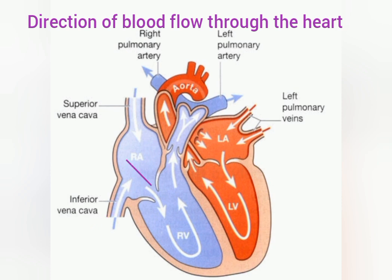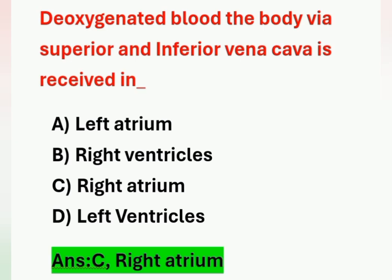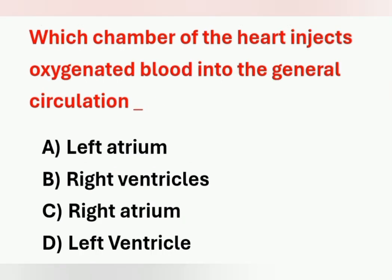Describing the blood flow path: from the right atrium, through the right atrioventricular valve, blood passes to the right ventricle. From the right ventricle, through the pulmonary artery, it goes to the lungs for purification. After purification, through the pulmonary veins, blood comes to the left atrium, then to the left ventricle, and through the aorta, purified blood is pumped to all parts of the body.